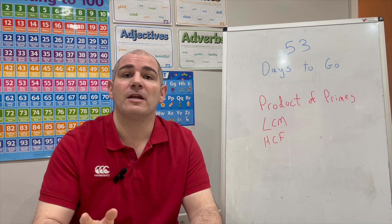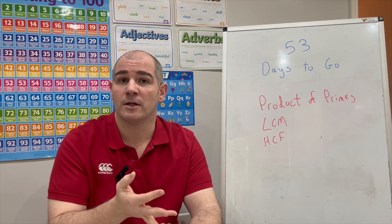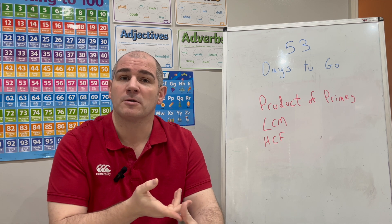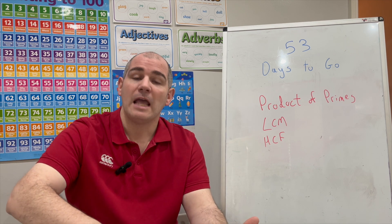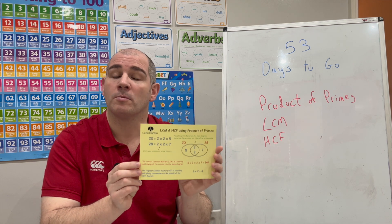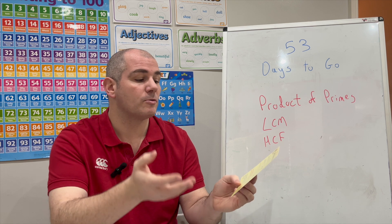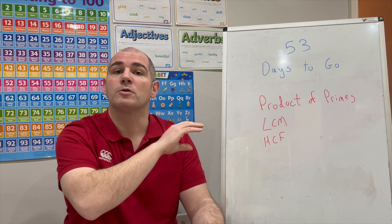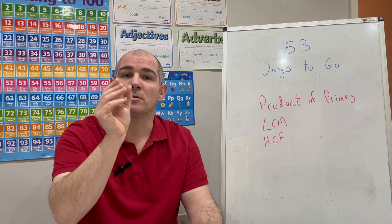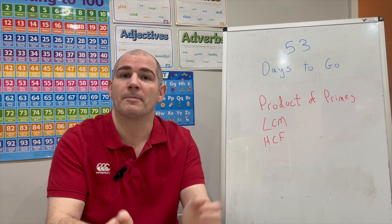In today's video, we've looked at how to write numbers as product of primes, how to use your calculator to do that, and how to find the lowest common multiple and highest common factor using product of primes. If you've got the revision card, card number 44 covers product of primes. Remember: for the lowest common multiple, multiply all numbers in the Venn diagram; for the highest common factor, multiply just the numbers in the middle where the circles overlap.